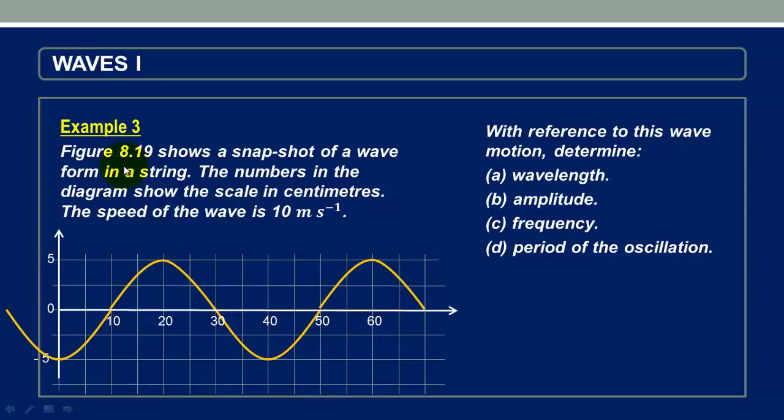In example 3, we are told that figure 8.19 shows a snapshot of a waveform in a stream. The numbers in the diagram show the scale in centimeters, and we are told that the speed of the wave is 10 meters per second. So this is the snapshot of the waveform in the stream.